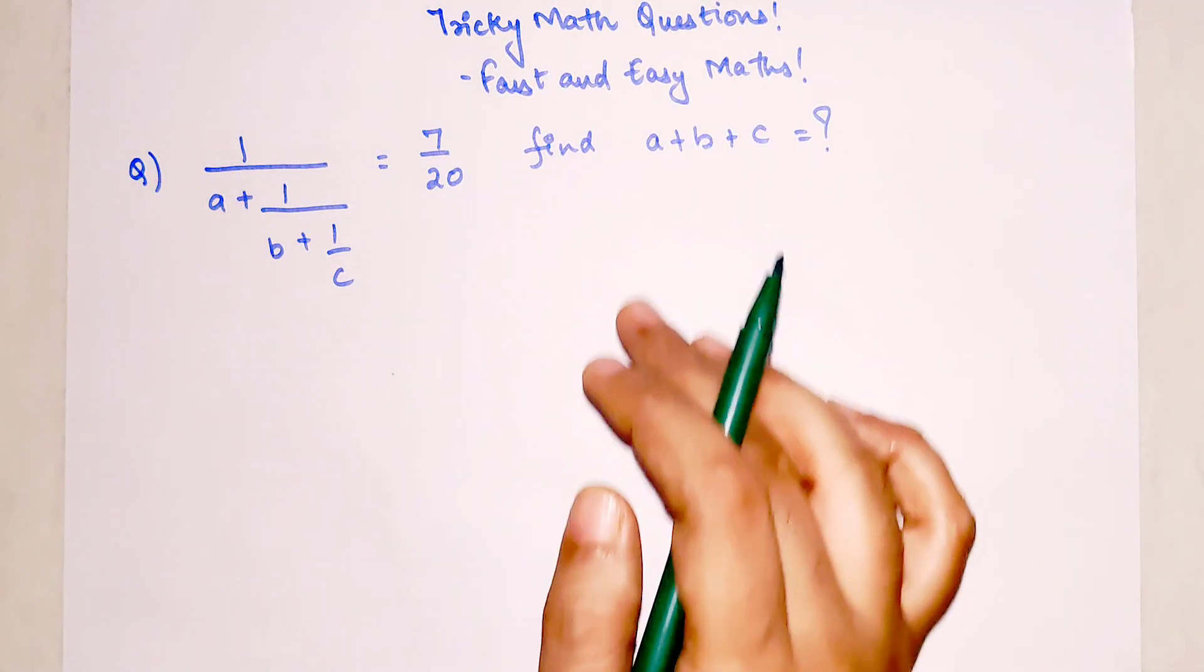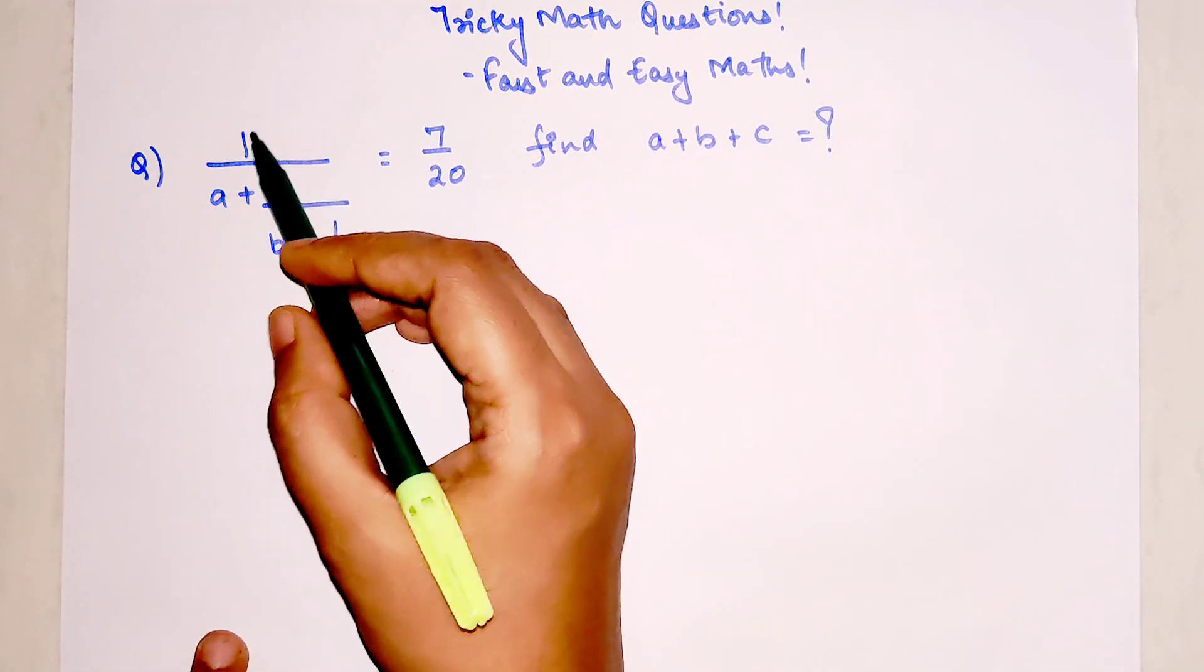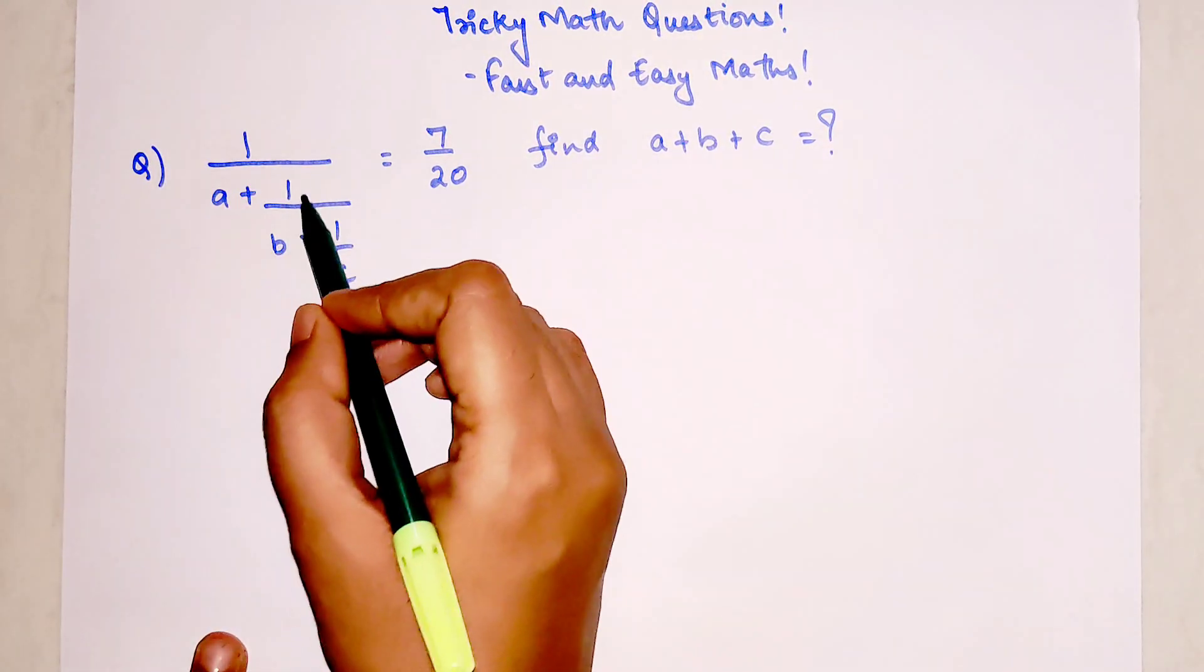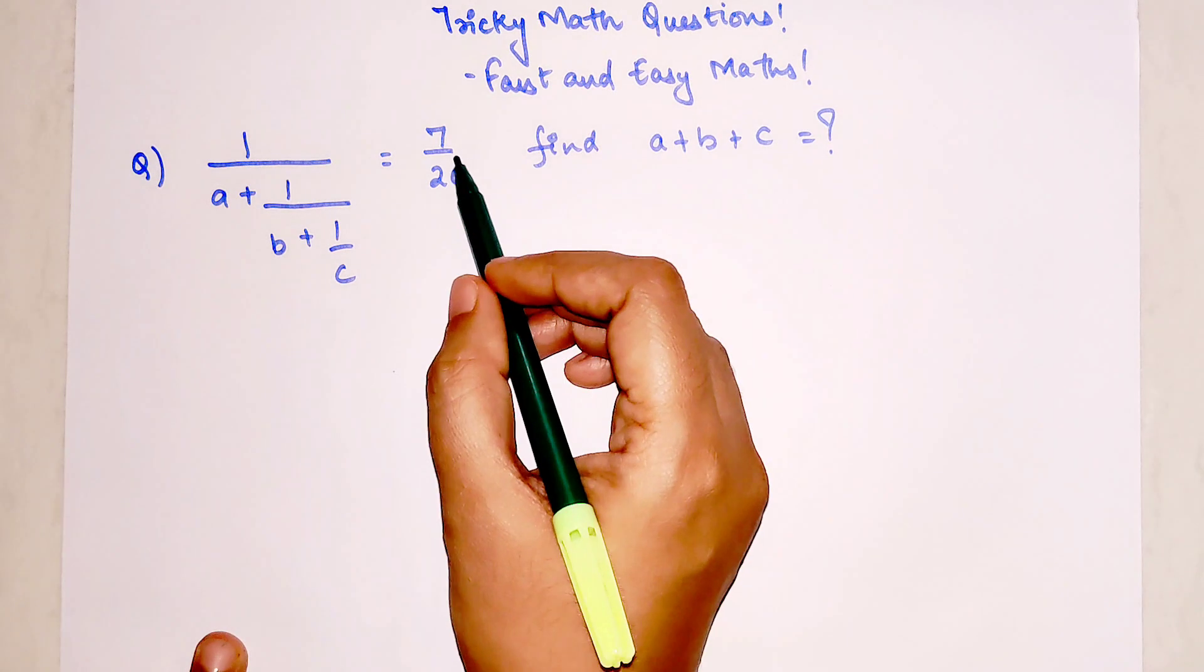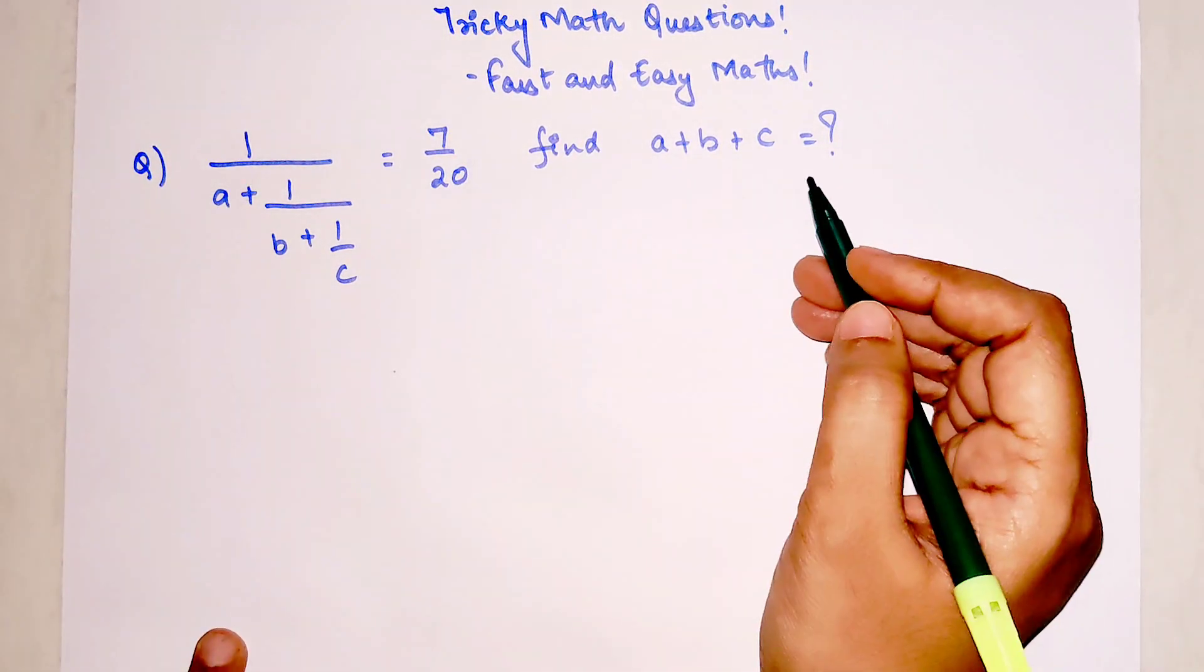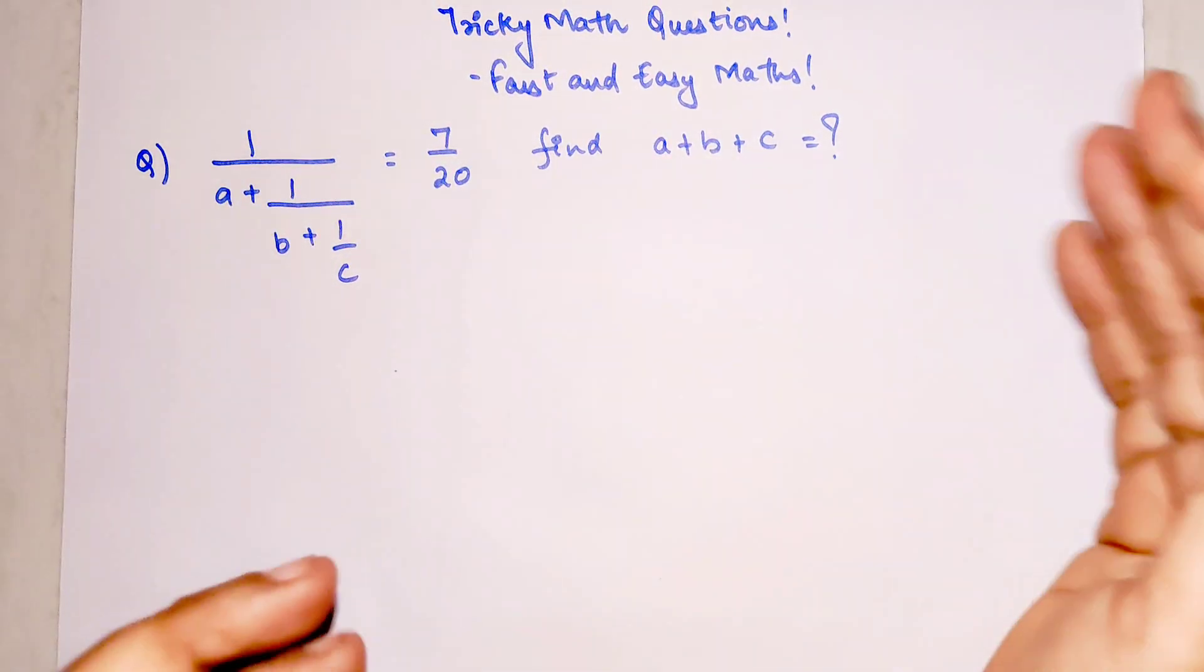So students, today we are going to solve a tricky math question where we are given 1 upon A plus 1 upon B plus 1 upon C is equal to 7 upon 20, and we have to find the value of A plus B plus C.